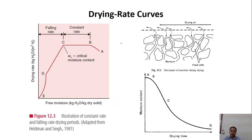During drying, air moves fast through the surface of the food. First, the free water on the surface will evaporate. After that, the water inside will diffuse and migrate out, then evaporate. It may evaporate somewhere before moving further out.